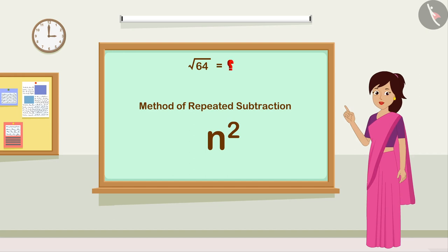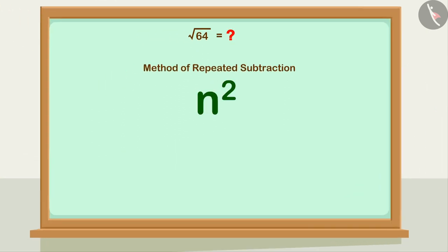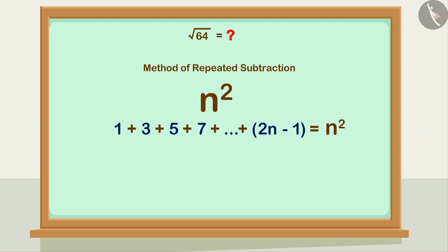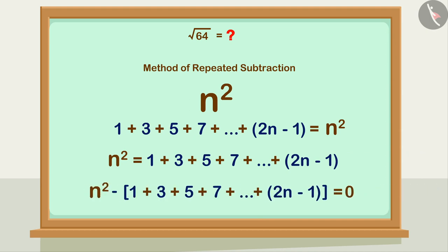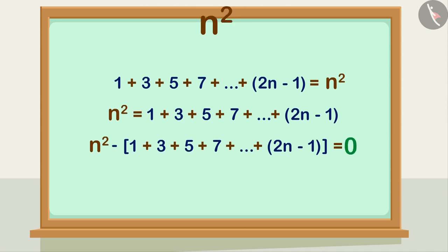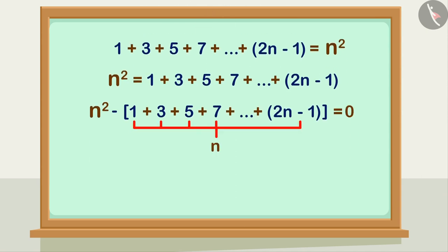Suppose we are given a perfect square number, that is the square of n. We know that the sum of the first n consecutive odd numbers is equal to the square of n. We can write this in a formula, and we can see that when we subtract them from this square number, we get zero.